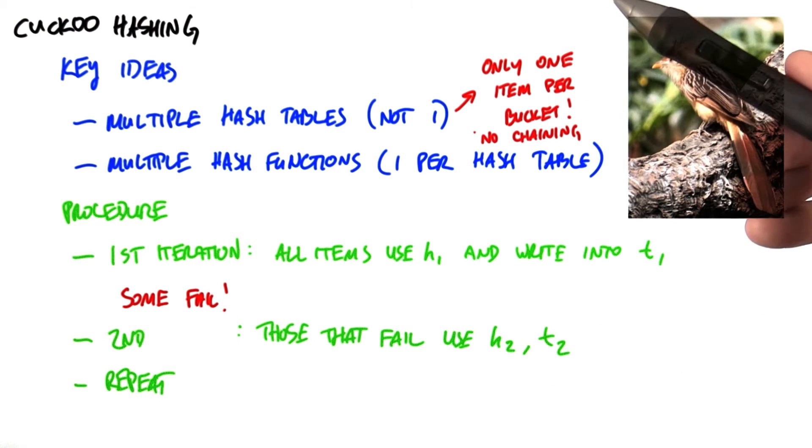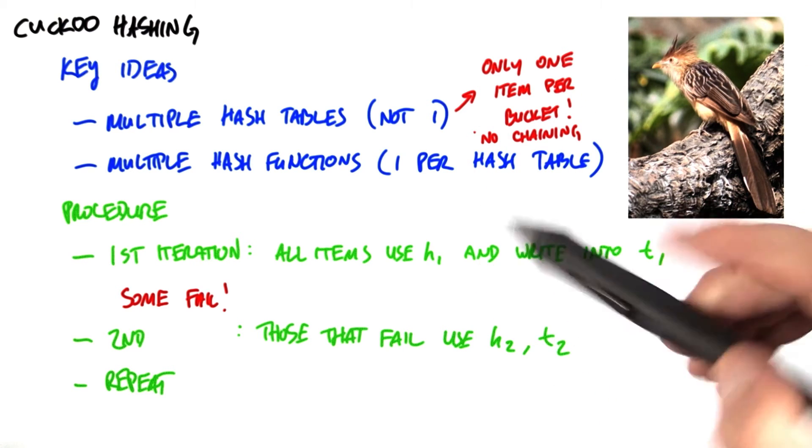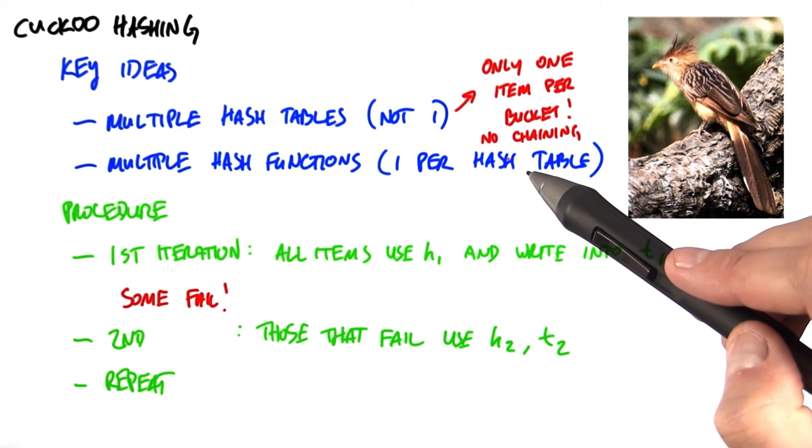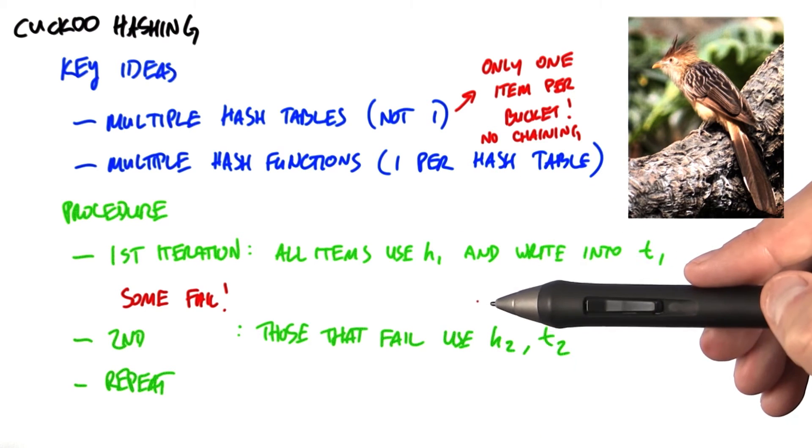In the example we'll show, we're going to have two hash tables and two hash functions. But the method generalizes to more than two. So here's what we're going to do at a high level.